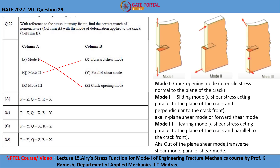The third mode is called the tearing mode, also known as out-of-plane shear mode, transverse shear mode, or parallel shear mode. The shear stress acts parallel to the plane of the crack and parallel to the crack front — hence the name parallel shear mode. So Mode 3 is parallel shear mode, and the correct option is option B.